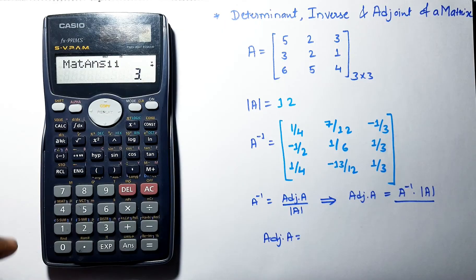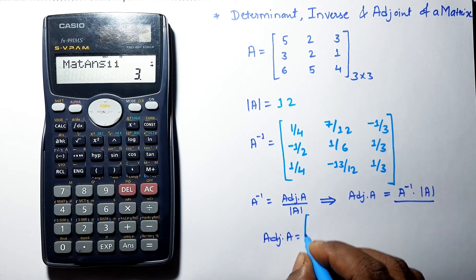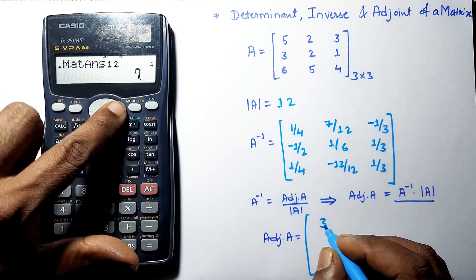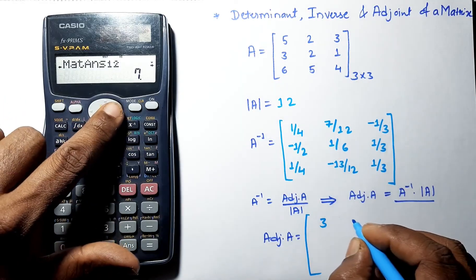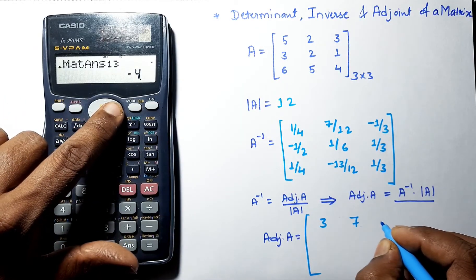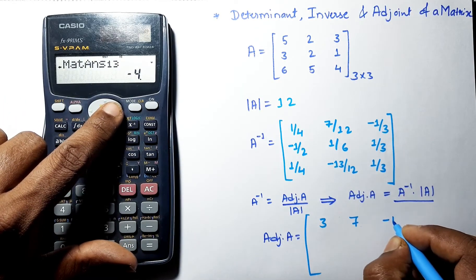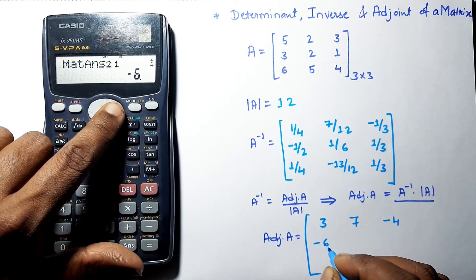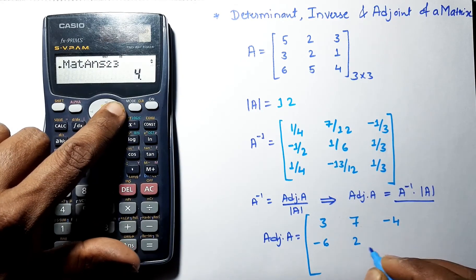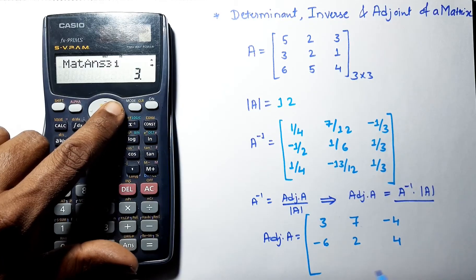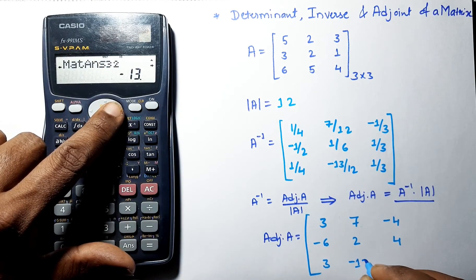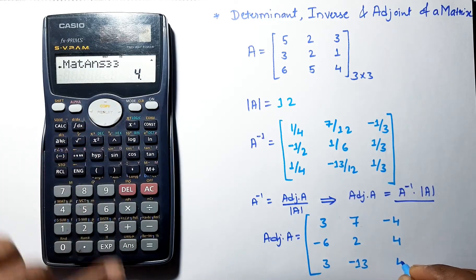Let's note down these values. The adjoint of A is: 3, 7, −4, −6, 2, 4, 3, −13, and 4.